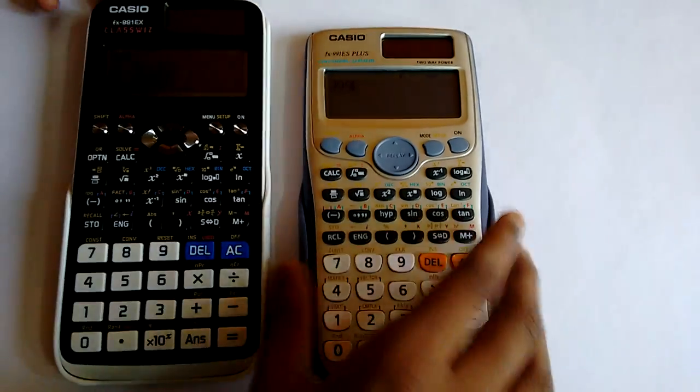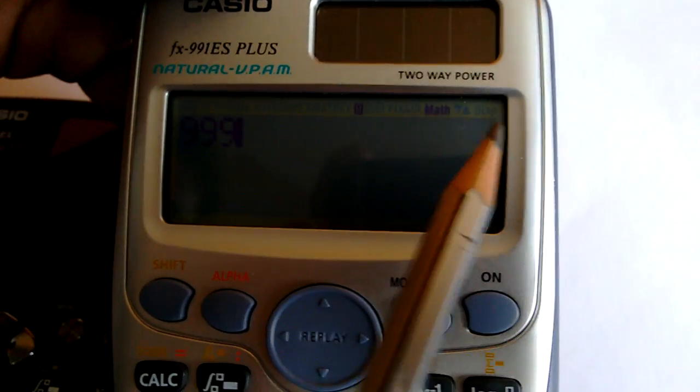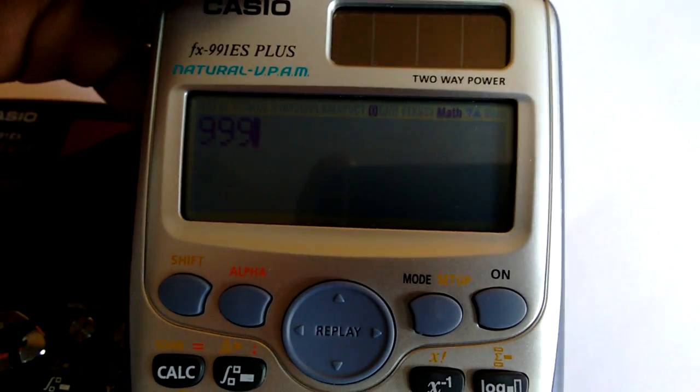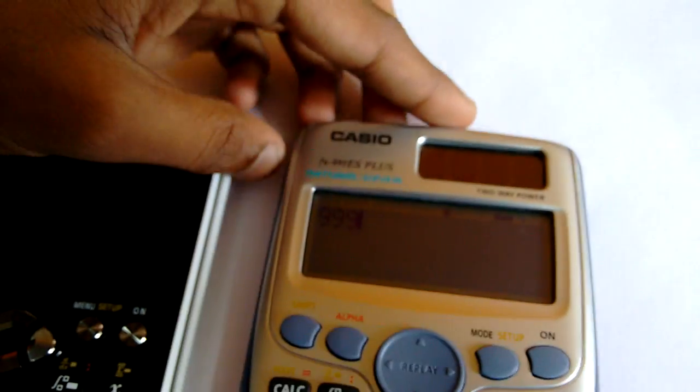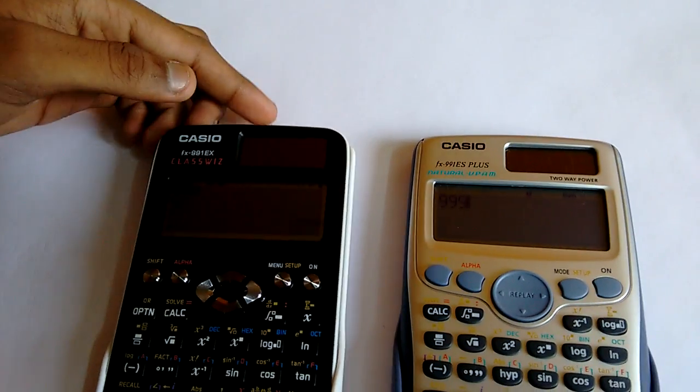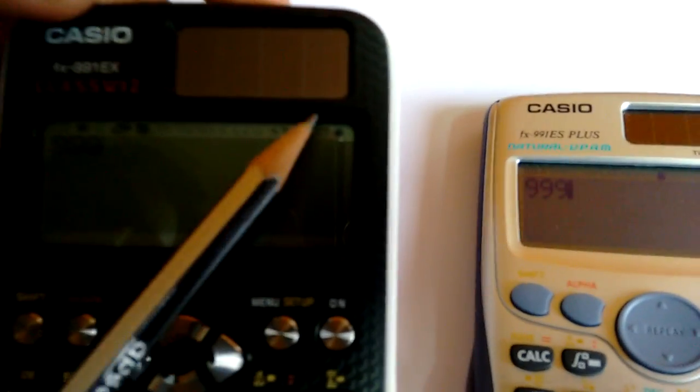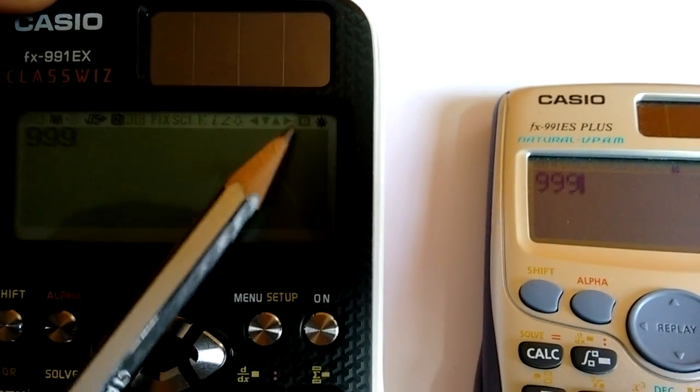Also I observed that there is no solar indication on the ES Plus version. We cannot know if it is charging by solar or using up the battery, but in the EX version we can clearly see that there is a small sun symbol here.